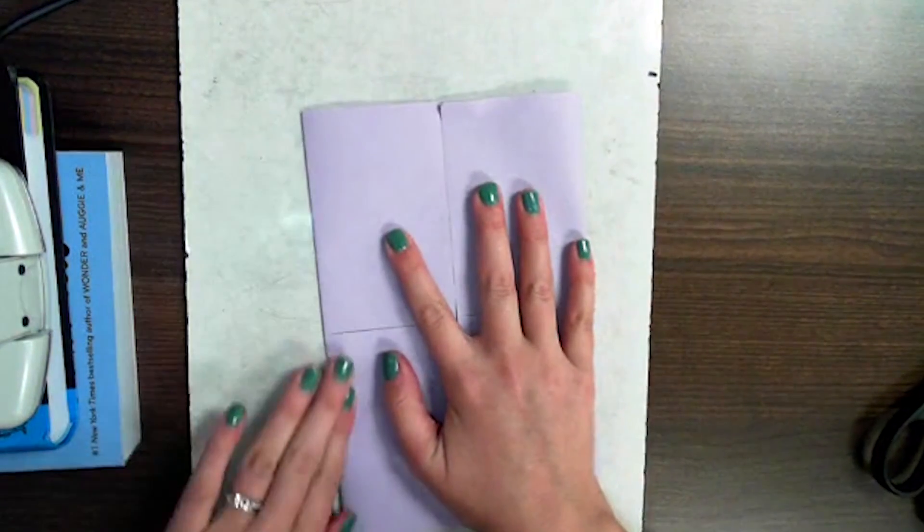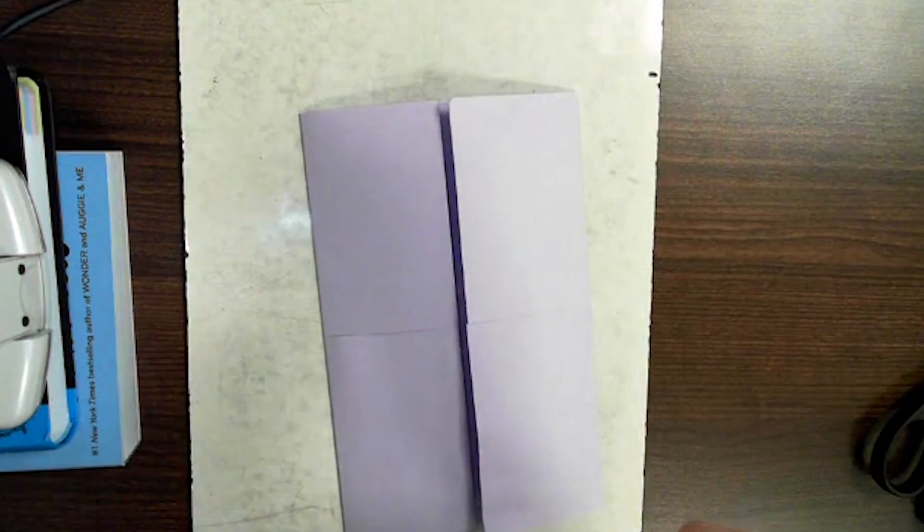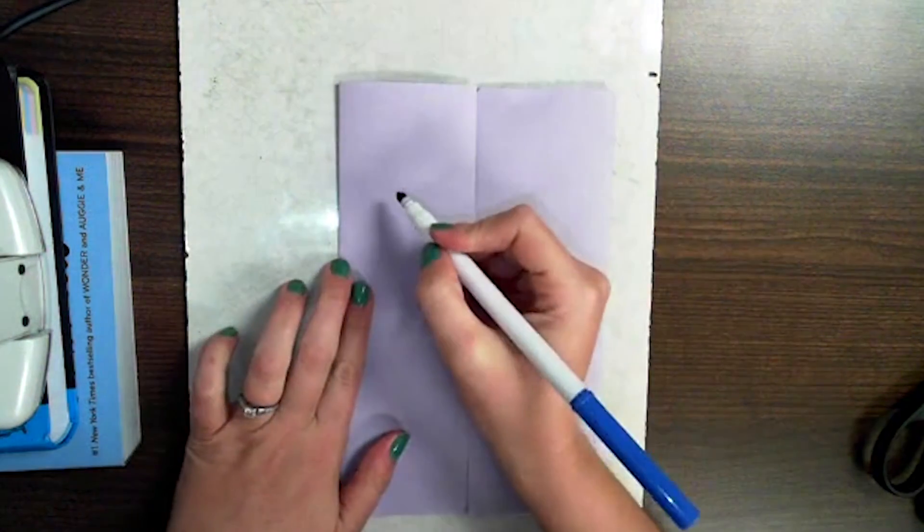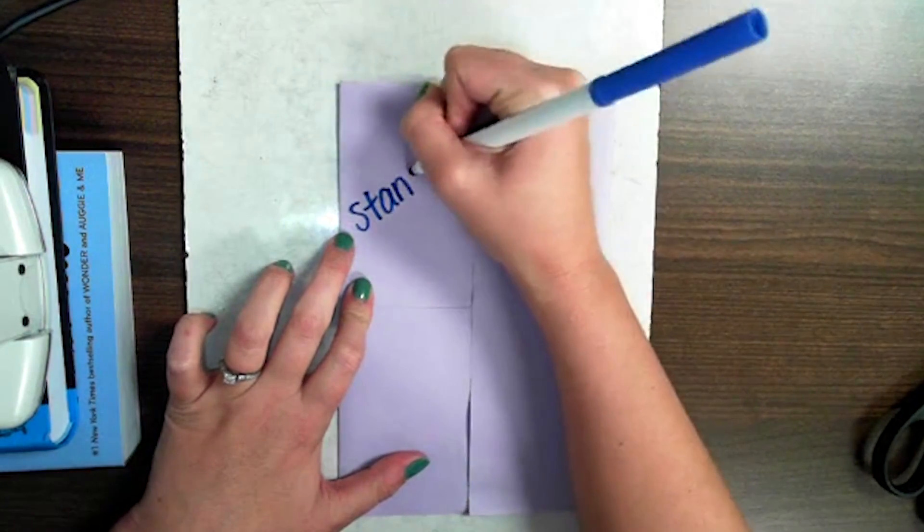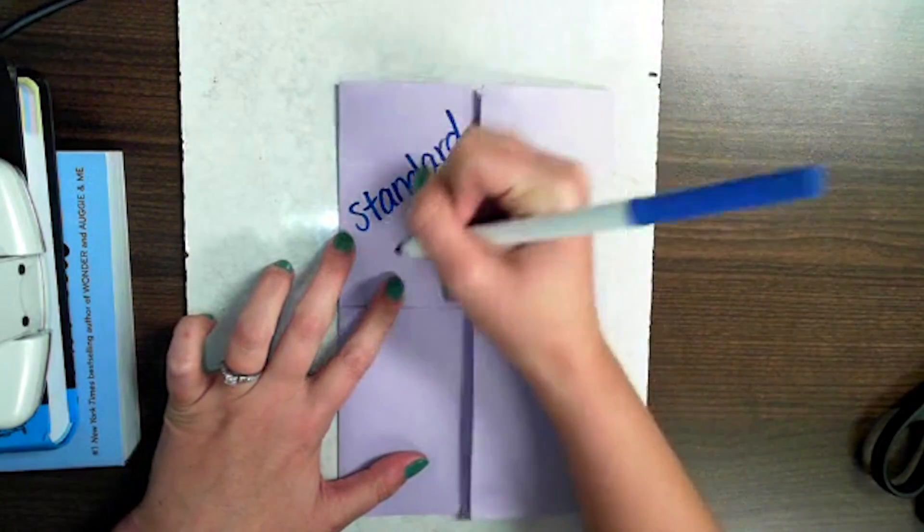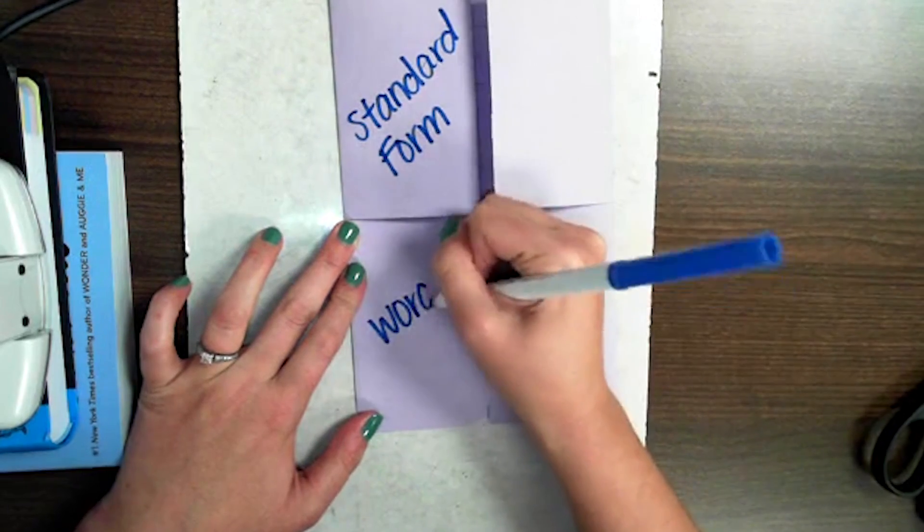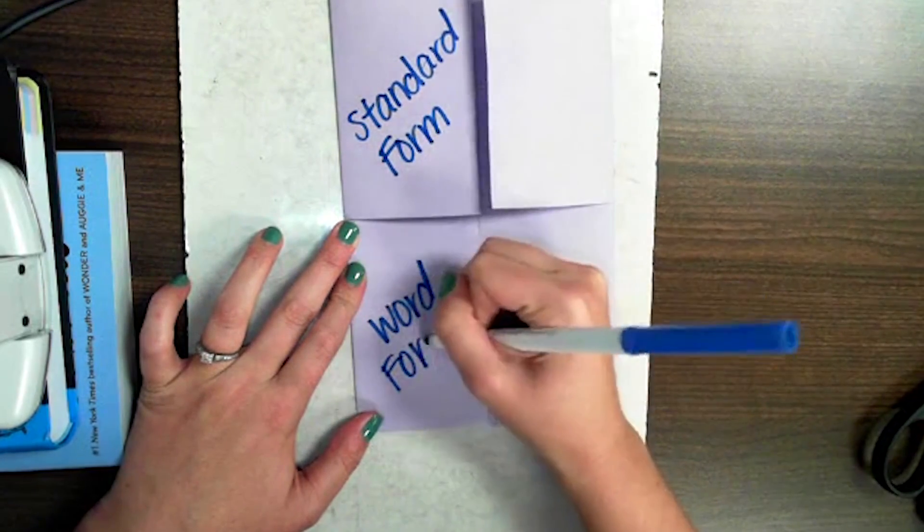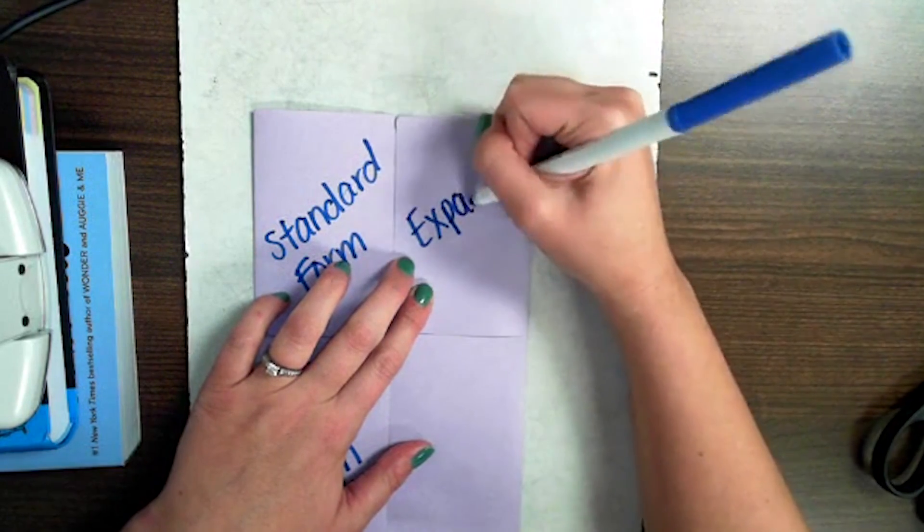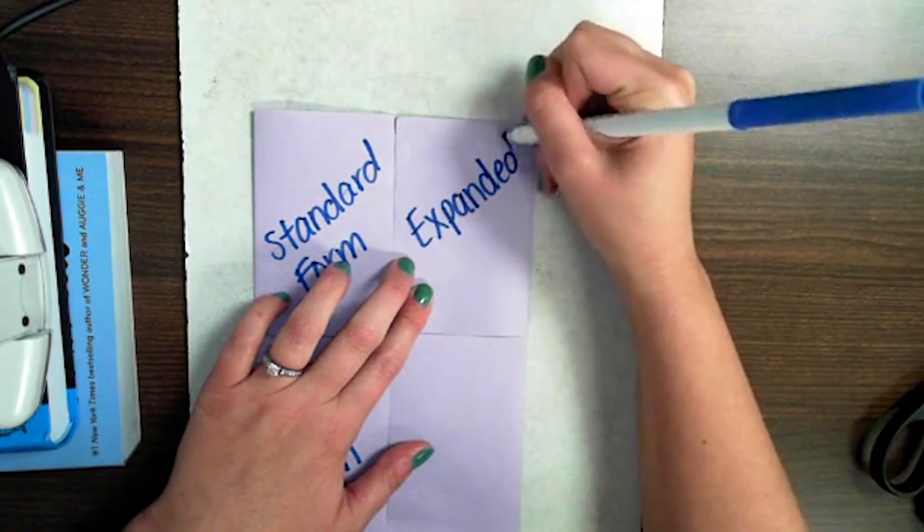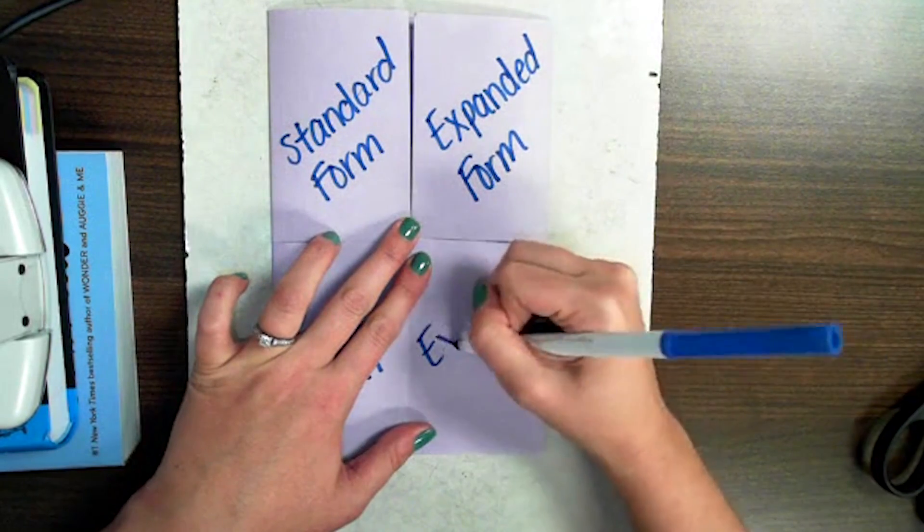Let's go ahead and label these flaps before we get started. This first one in the top left is going to be standard form. Then we're going to have word form, expanded form, and then expanded notation.